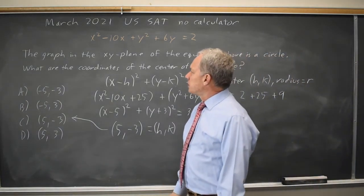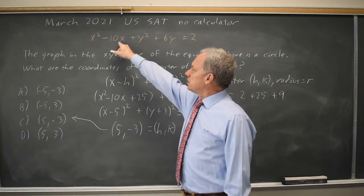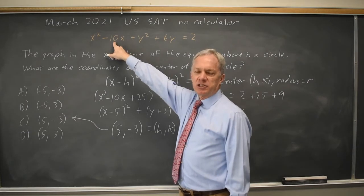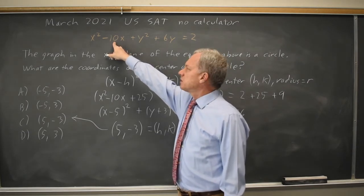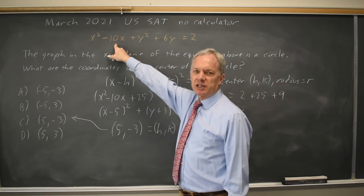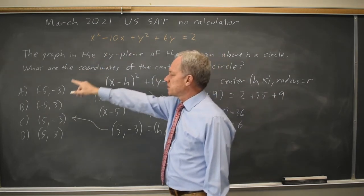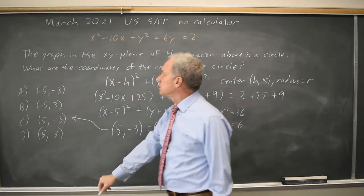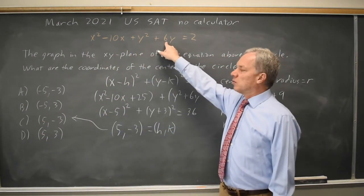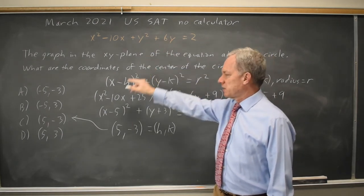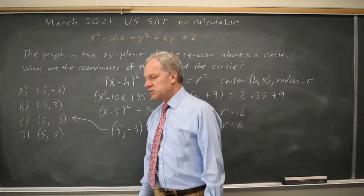For a shortcut here, we see that the center will be half the linear coefficient and then flip the sign. Since the linear coefficient for x is -10, half of that is -5, flipping the sign is positive 5 which is C or D. Since the y linear coefficient is 6, half of that is positive 3, flipping the sign is -3 so it's choice C and not choice D.